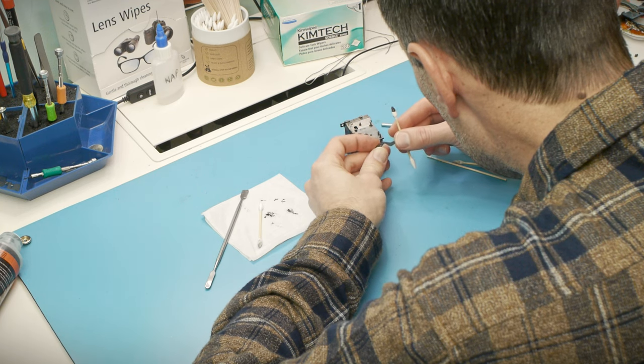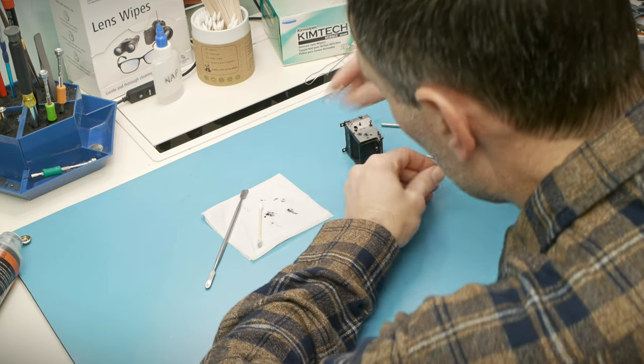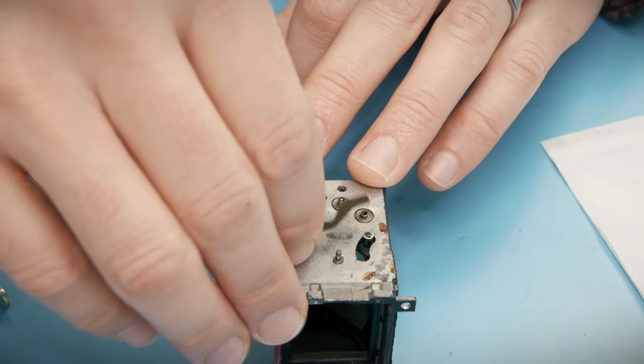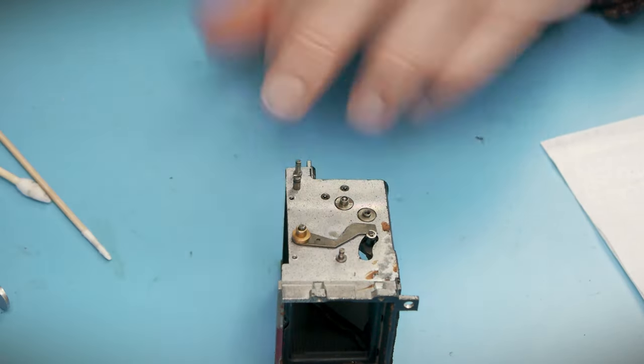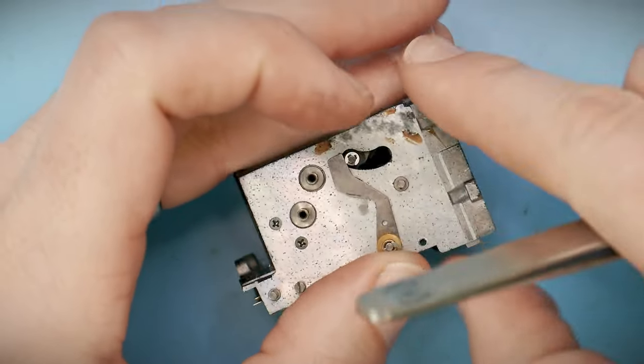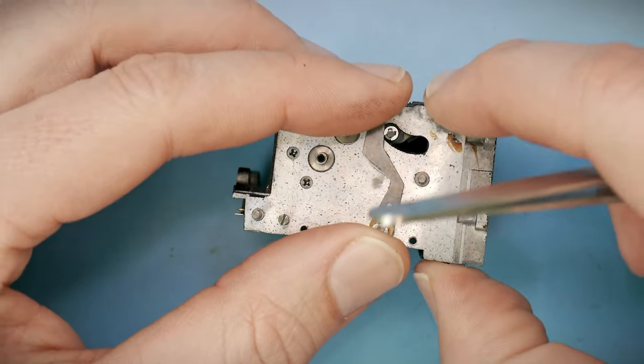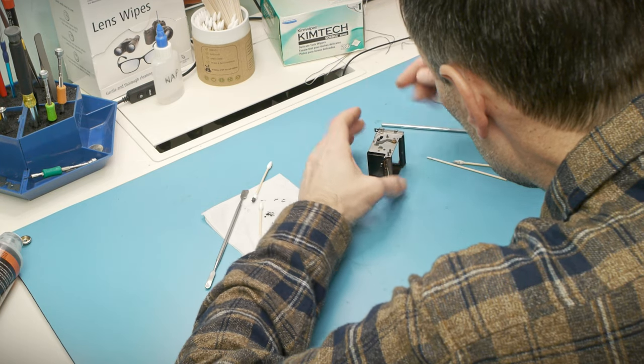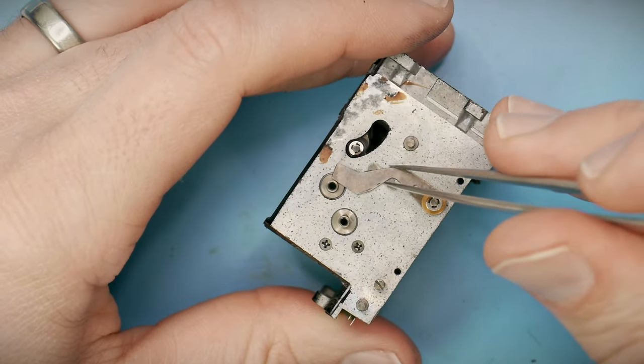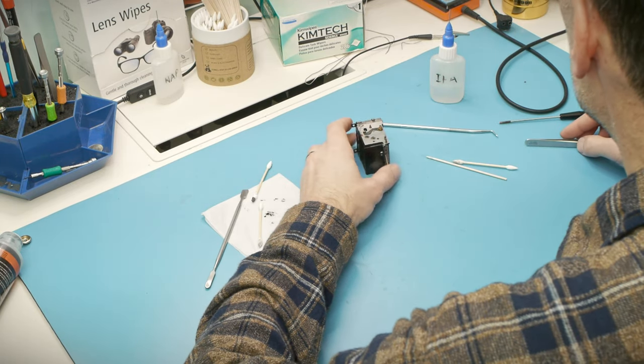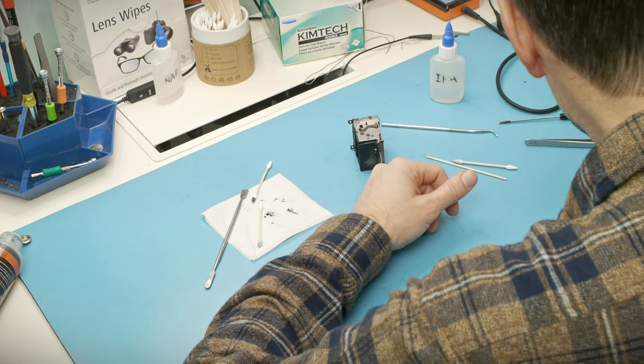But other than that, no lubrication is necessary on the mirror box. The pivots run dry without any oil. I tend to only lubricate points if the service manual explicitly calls for it. And for the K1000, the only places indicated are the latching points, a couple areas in the winding mechanism, and oil for the fast-moving parts in the shutter. Everything else in the camera is dry.